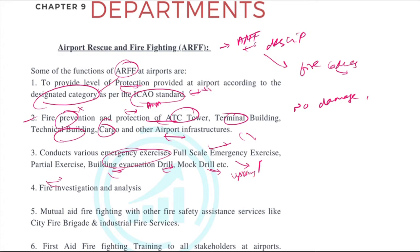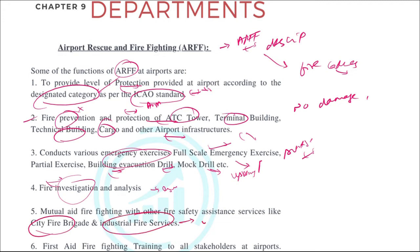They carry out drills regularly so they know what to do when a fire happens. If something does occur, they have to conduct an investigation and ensure no such thing happens in the future. They also have to coordinate with the city fire brigade and industrial fire services in the vicinity of the airport.